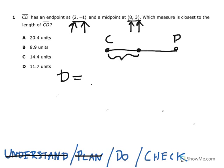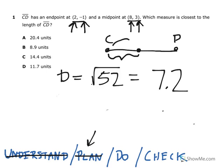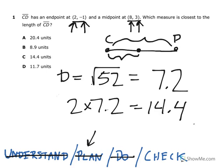Okay, I got my calculator and found the square root of 52 is approximately 7.2. Now wait a minute, that's not one of my answer choices. So let me think about this. What was my plan? Oh, that's right. My plan was to find the distance to the midpoint, but then I have to double it because I'm actually looking for the whole length. So let's double 7.2, and that gives me 14.4. And 14.4 is one of my answer choices.